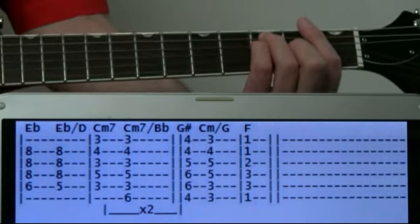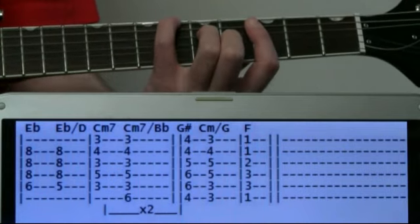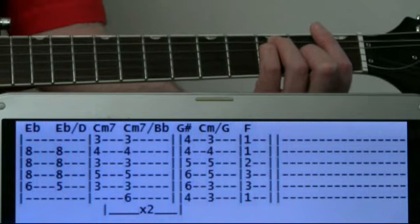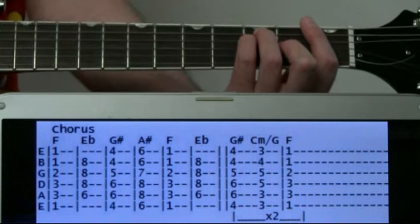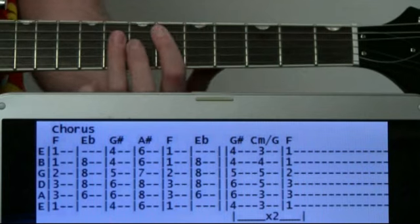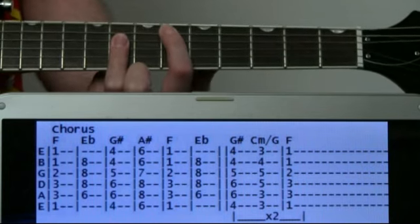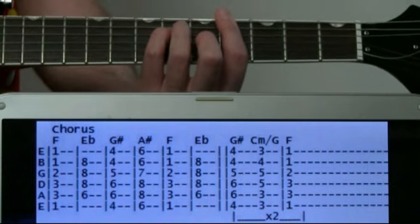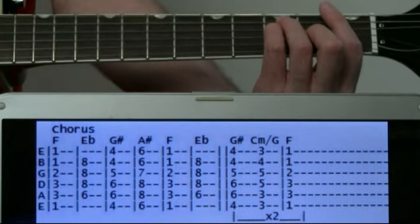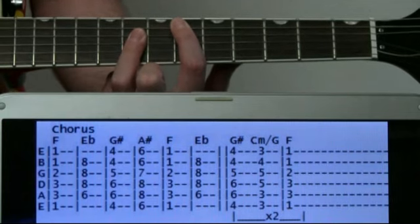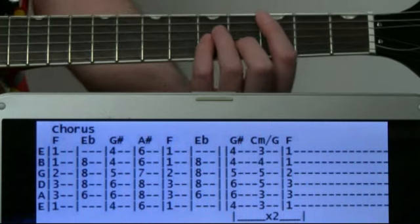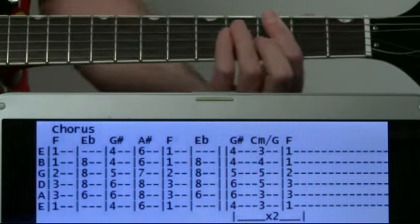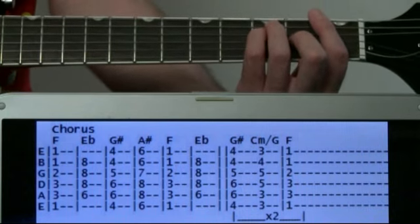The chorus comes in, we start on the F chord, then come up to the E flat, 6th fret of the A, 8-8-8 on the G-B-E. Then G sharp to A sharp, back to F, E flat. And then we do that little progression we did at the end of the verse: G sharp, C minor with the G bass note to F, twice on that.